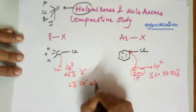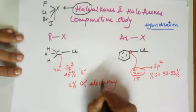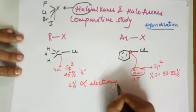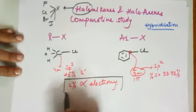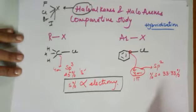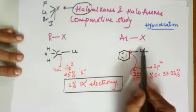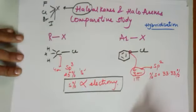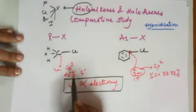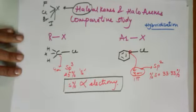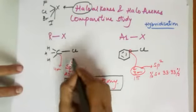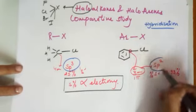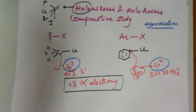This 33.33% s-character is higher than the 25% in alkyl halides. Also, percentage s-character is directly proportional to electronegativity. Since it is directly proportional to electronegativity, we can talk about the polarity of the C-X bond in both compounds. So hybridization in case of alkyl halide is sp3 and that in case of aryl halide is sp2 — that was the first parameter.